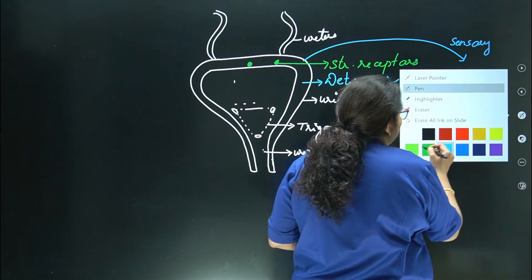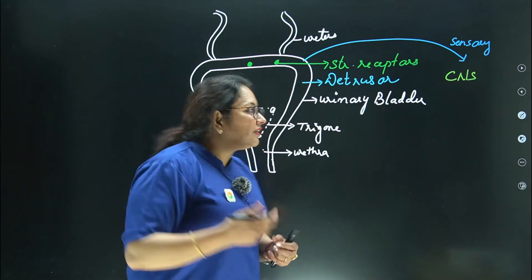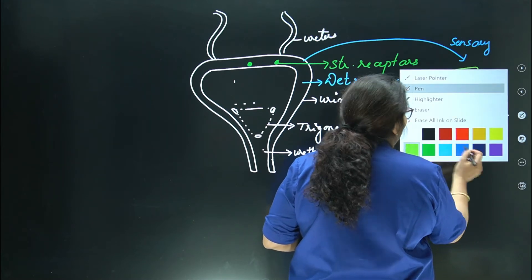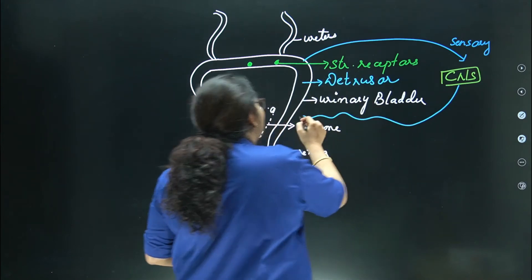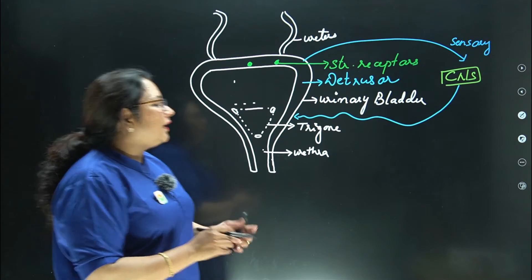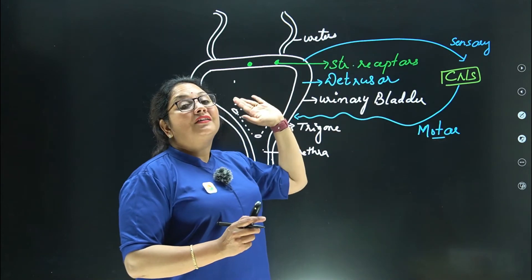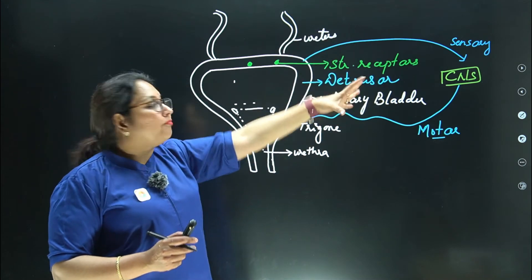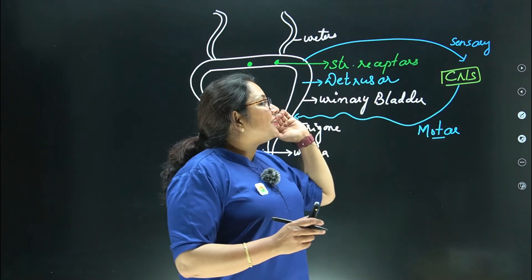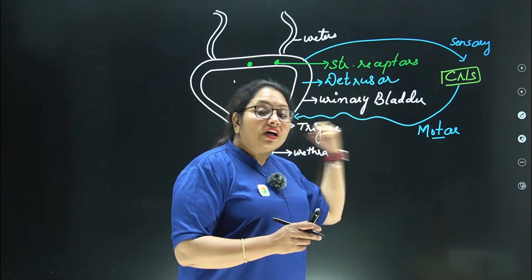Central nervous system usko interpret karta hai, aur information waapis aati hai motor nerve ya motor neuron ki form mein. Jab kisi organ se CNS ke paas information jaati hai toh sensory nerve le jaati hai, aur CNS se us organ ya muscle ke paas jab information aati hai toh motor nerve ya motor neuron leke aata hai.